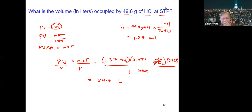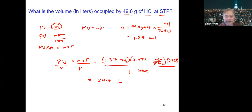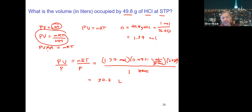For any PV = nRT problem, you may be asked for pressure, volume, moles, or temperature — as long as you know how to rearrange the equation. The density of a gas can also be derived from PV = nRT as d = m/V = PM/(RT), where M is molar mass. From this, molar mass M = dRT/P. You may not be given this formula on the exam, so be ready to derive it.